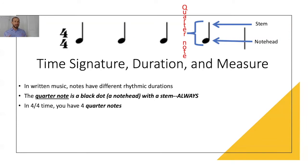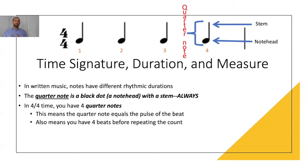Time signature depends upon duration to determine the amount of beats per measure. Written music has different rhythmic durations that can be written into the note. The quarter note is a black dot or note head with a stem, and that's always the case. In 4/4 time, we have four quarter notes. This means the quarter note equals the pulse of the beat, and we'll have four beats before repeating the count.